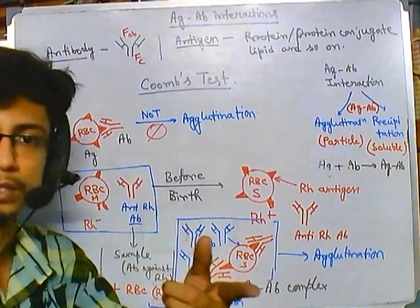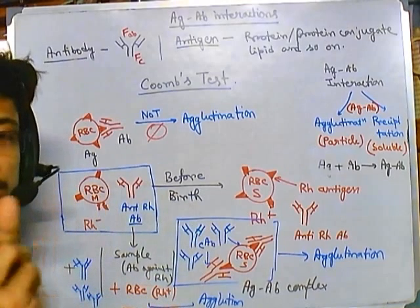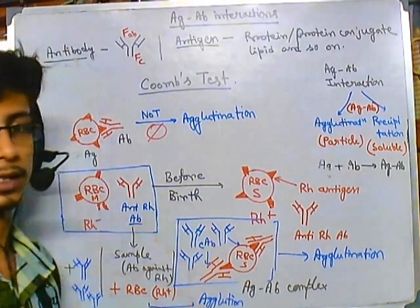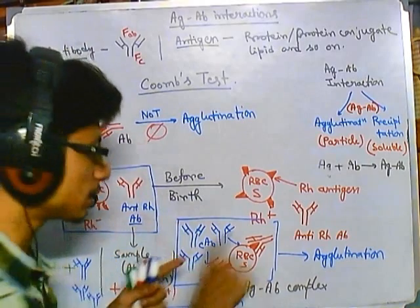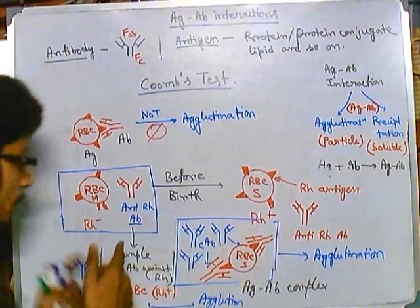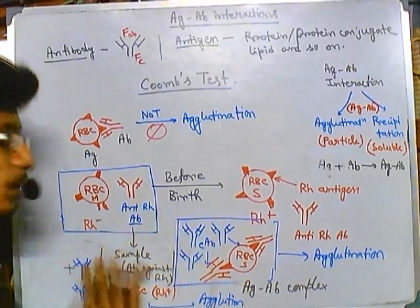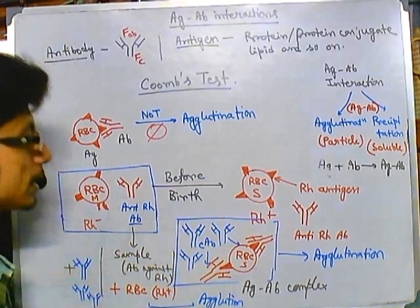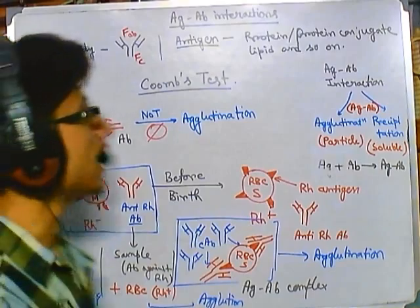This second procedure is called the indirect Coombs test. For the indirect test, we take just the serum, then supply the RBCs externally, and finally add the Coombs reagent. For the direct test, we simply add the Coombs reagent to the sample directly, since the antigen-antibody interaction has already occurred inside the patient. The Coombs test can detect both incomplete antibodies and antigen-antibody complexes. I hope that's helpful. Thank you.